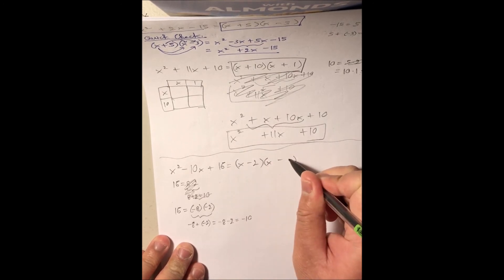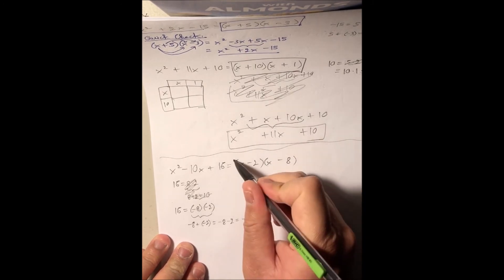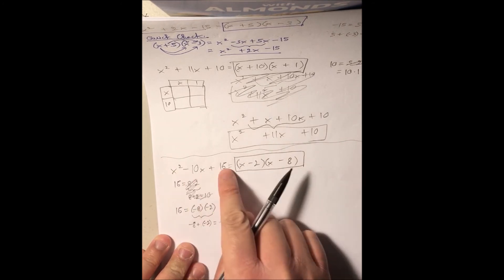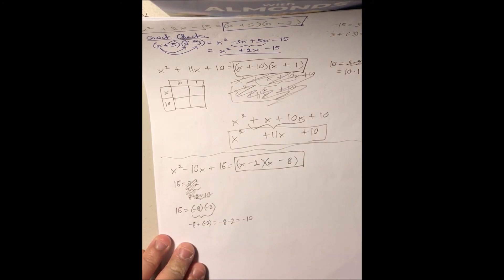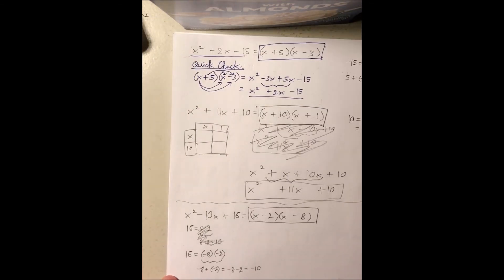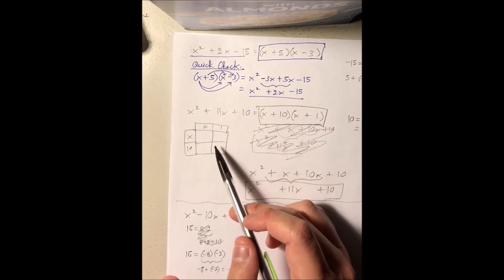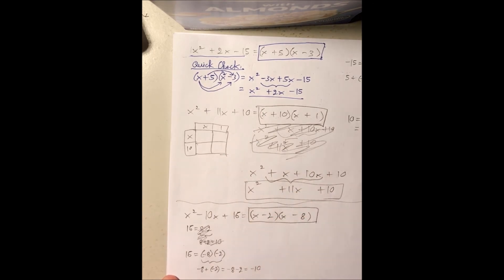Negative 2, and then minus 8, and this is the factor form of this example. And you guys can go ahead and check it just like I did up here, either by foiling or doing the box method.